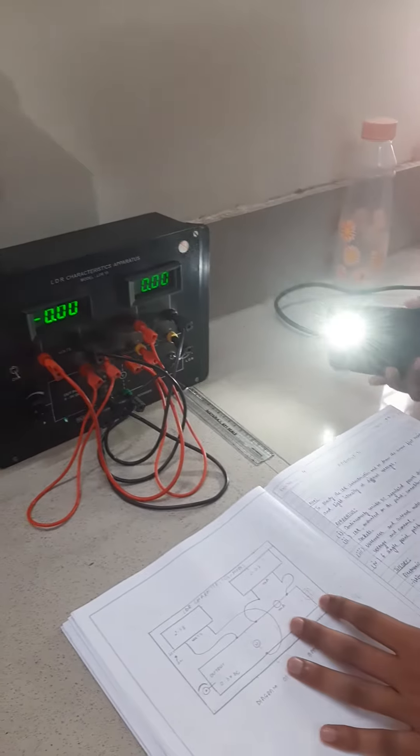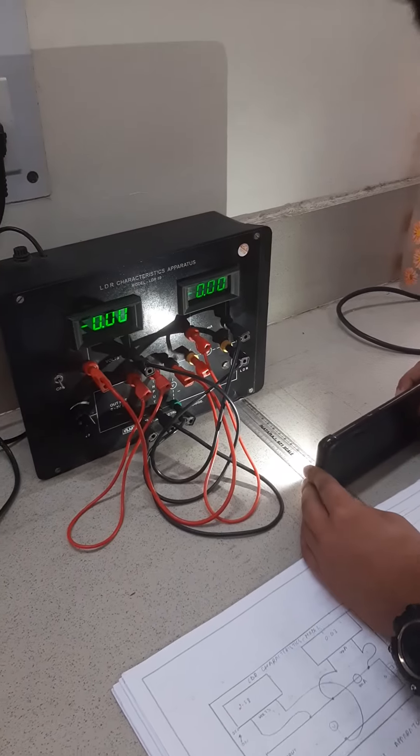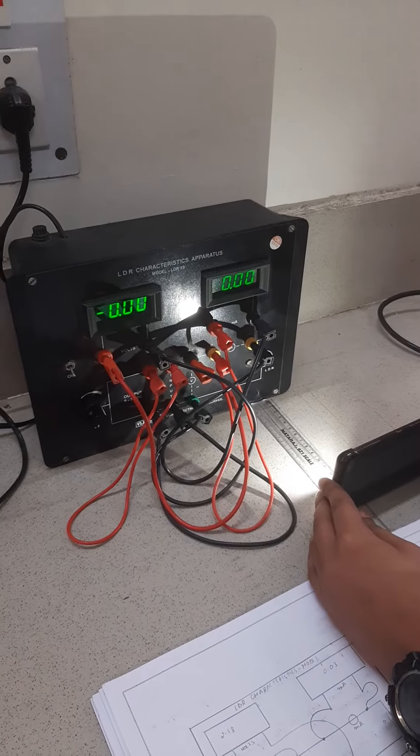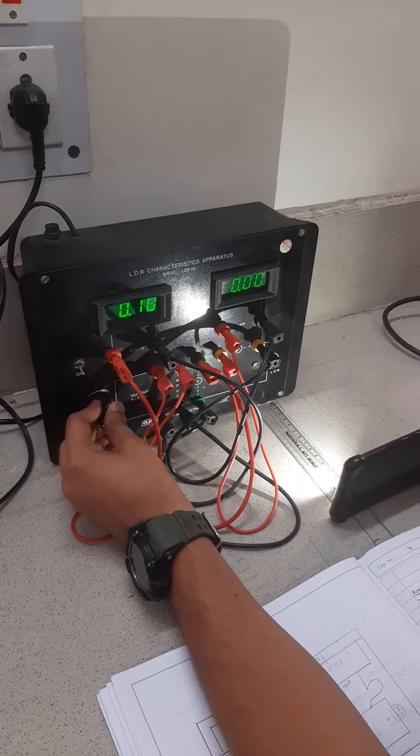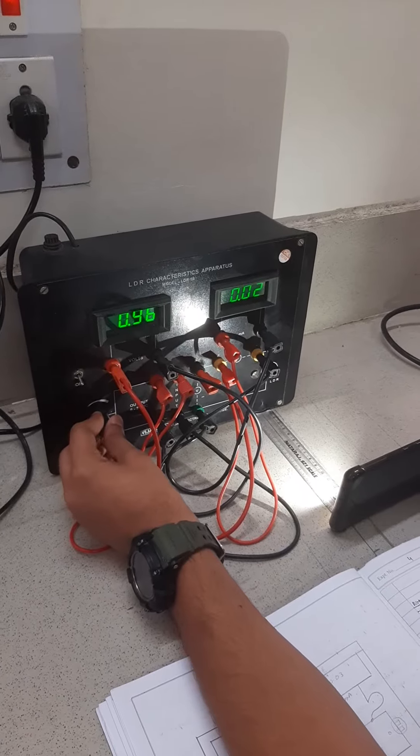So we will demonstrate the experiment now. First of all, we will place the flash at 15 cm and observe the reading of ammeter at different voltages. We will change the voltage and we observe that the current is increasing.